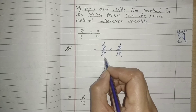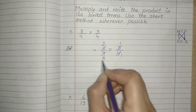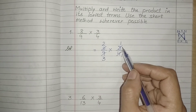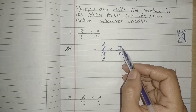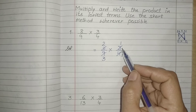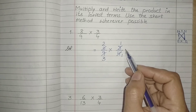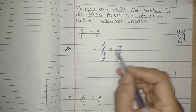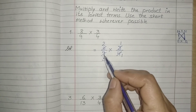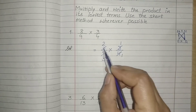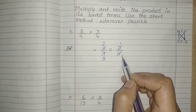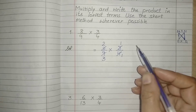3 threes are 9. We choose the common number. It's like 2: two threes are 3 and two fours are 4.